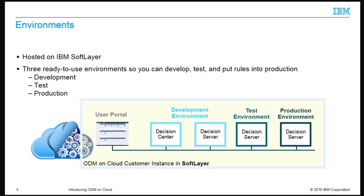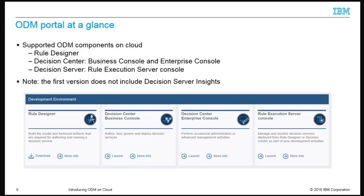The Decision Server runtime environment is used for running the decision services during development activities. The test environment contains the Decision Server component only, and it is used for non-functional tests such as performance, system acceptance, and integration tests. In the production environment, the rule execution server runtime environment runs the decision service in the context of the production application. ODM on cloud provides similar collaborative role-based capabilities as those provided by the ODM standard on-premise version. The on-premise ODM components also supported in IBM ODM on cloud are Rule Designer, Decision Center, and Decision Server.